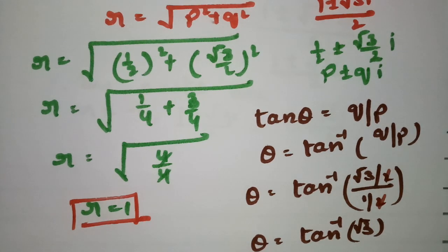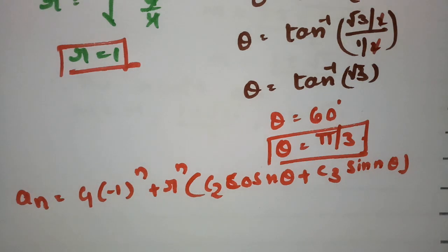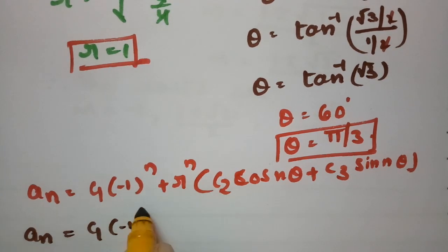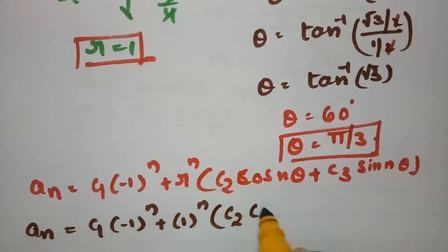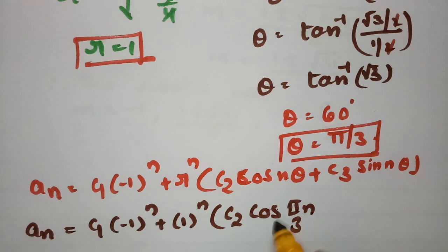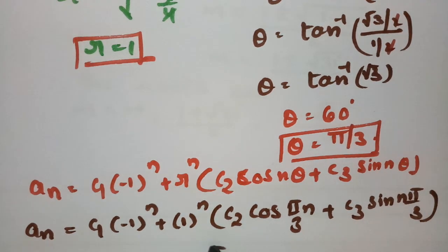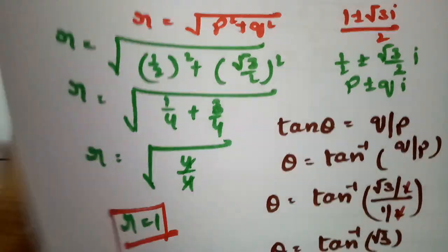Substituting all values, the general solution is: aₙ = c₁(−1)ⁿ + (1)ⁿ(c₂ cos(nπ/3) + c₃ sin(nπ/3)). Since r = 1, this simplifies to aₙ = c₁(−1)ⁿ + c₂ cos(nπ/3) + c₃ sin(nπ/3). This is how we solve when the roots include complex roots — this is the procedure to follow.